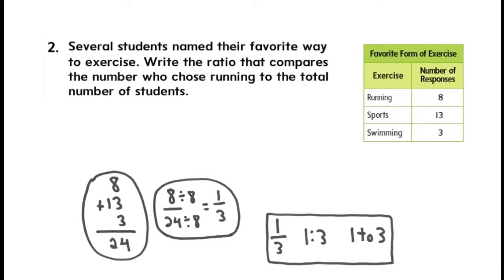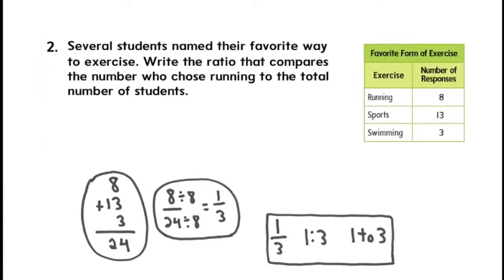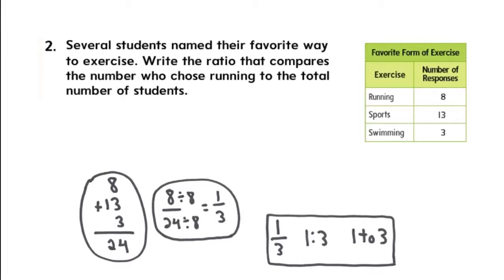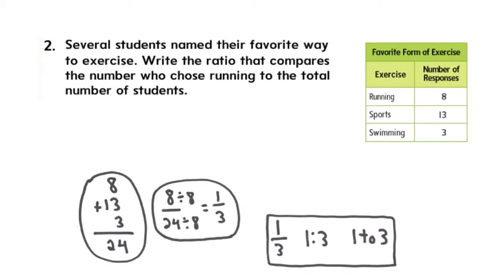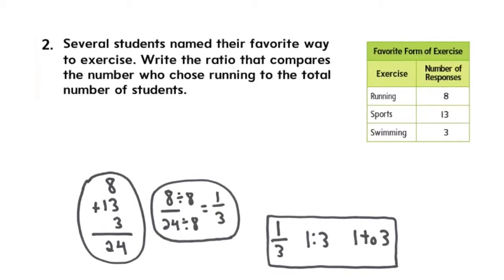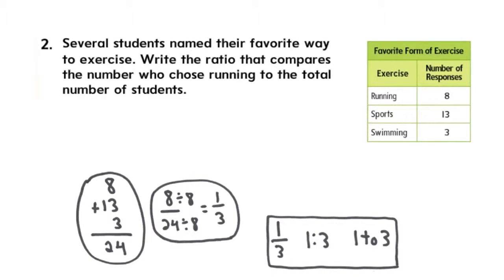In example two, you would have to refer to the data on the right side. If you read the problem, they're asking you to write a ratio that compares running to the total number of students. So the first step would be add all the different responses, which would be 8 plus 13 plus 3.